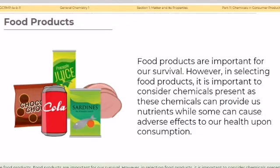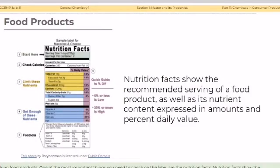Next are food products. Food products are important for our survival. However, in selecting food products, it is important to consider the chemicals present, as these chemicals can provide us nutrients while some can cause adverse effects on health upon consumption. One of the most important things to check on the label is the nutrition facts.